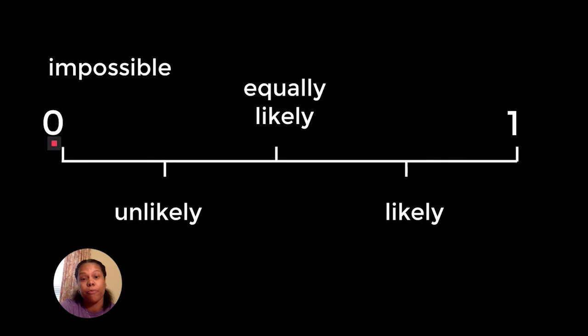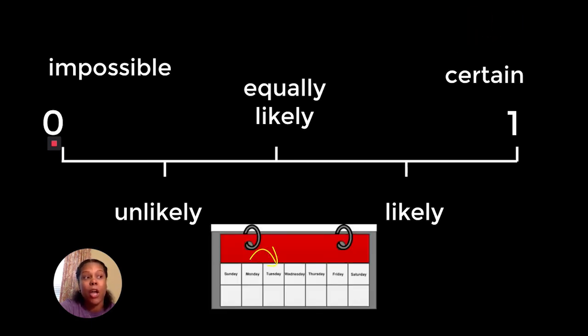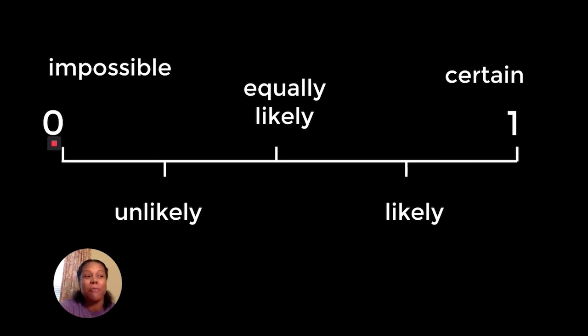Certain means that it is a 100% chance an event is going to occur. It is certain that the day after Monday will be Tuesday. Another thing I can be certain about is that you are a pretty smart kiddo for taking the time to watch this short video on probability.